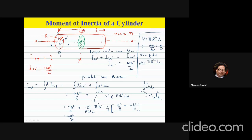In the second term, π cancels with π, r² cancels with r². I have l³, a factor of 1/3 already outside, and m and l remaining. The 2 gives a denominator of 4, and 4 times 3 is 12. So I get I of y-y' = mr²/4 + ml²/12. In this expression, l comes into the picture because when rotating about this axis, the length of the cylinder matters.